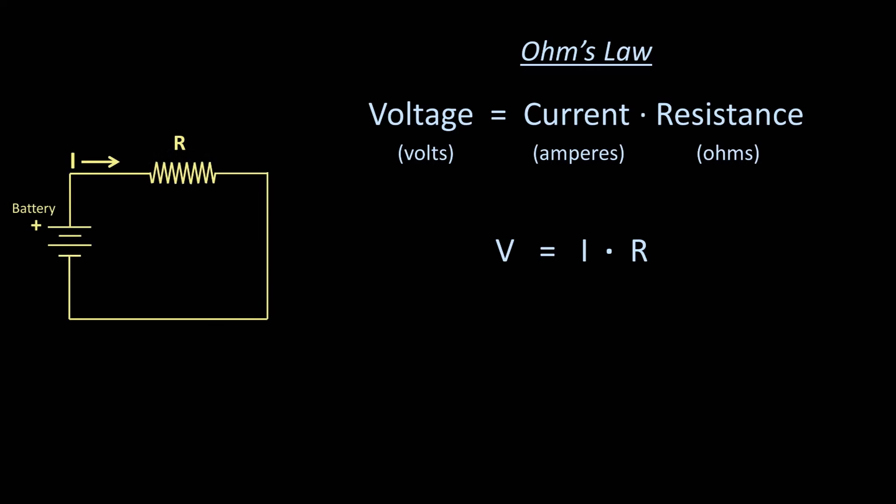Here is a simple circuit. The battery, represented by four lines of alternating length, provides the voltage. The resistor is represented by a zigzag, which interrupts the normal, unimpeded current, represented by I, as it travels clockwise, starting and ending at the battery.